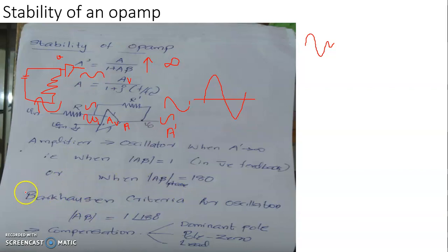This criteria is referred to as the Barkhausen criteria. The criteria is mathematically represented as modulus A beta equal to one and phase angle 180 degrees. When this criterion is satisfied, this is no longer stable as an amplifier, instead it's stable as an oscillator.